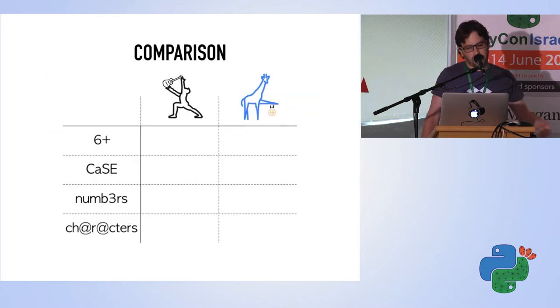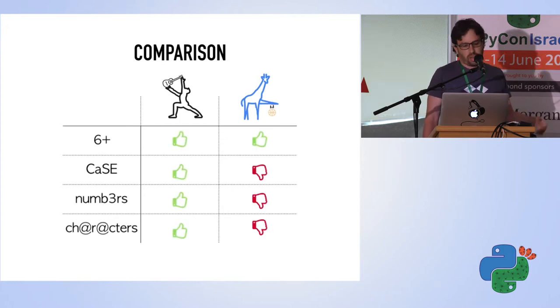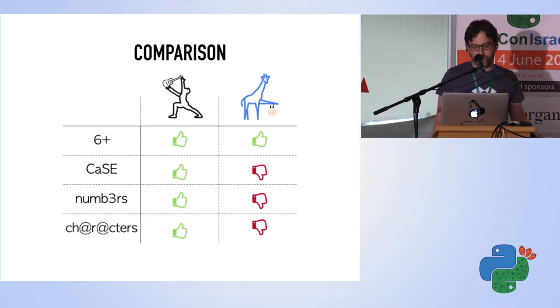I drew a table with my passwords and the four rules to see which password matches more rules. Both have six characters or more, only one has different cases, only one has numbers, and only one has special characters. So I could call the winner easily.